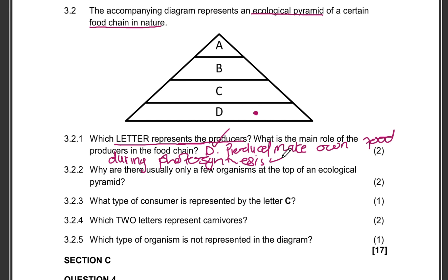Our next question is 3.2.2. Why are there usually only a few organisms at the top of the ecological pyramid? The number of organisms decrease in our ecological pyramid as we go up.